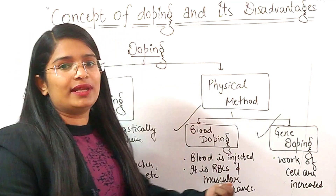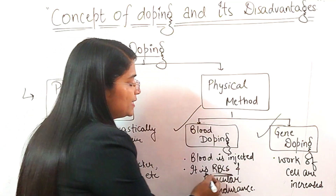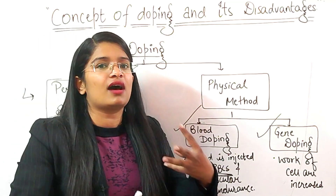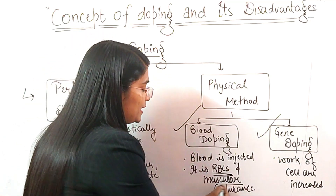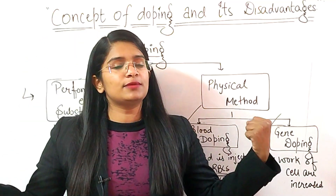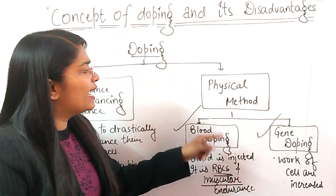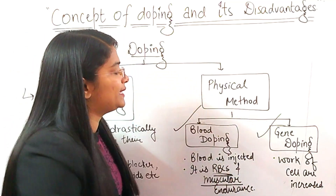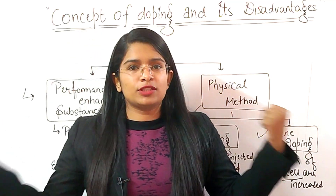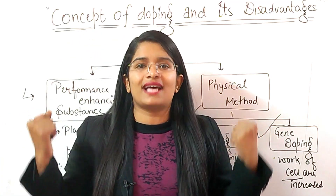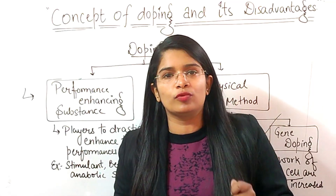In blood doping, blood is injected into the player's body, which increases the red blood cells. This increases muscular endurance, making the muscles stronger — and this is also cheating. In gene doping, cells are introduced into the body to increase muscle and bone strength. Doping can be classified into these two main categories.